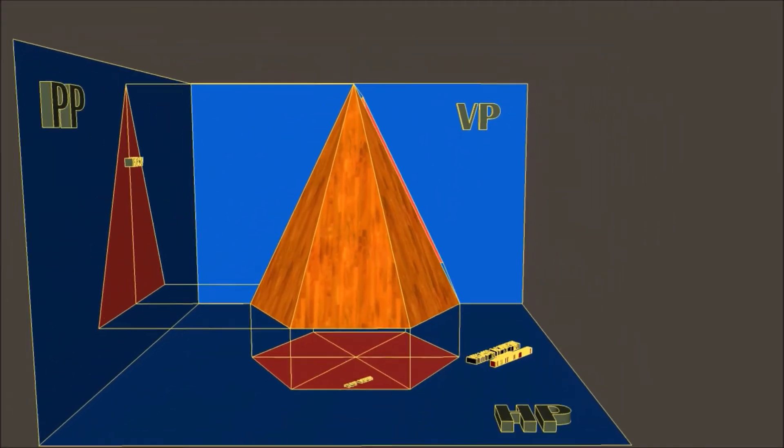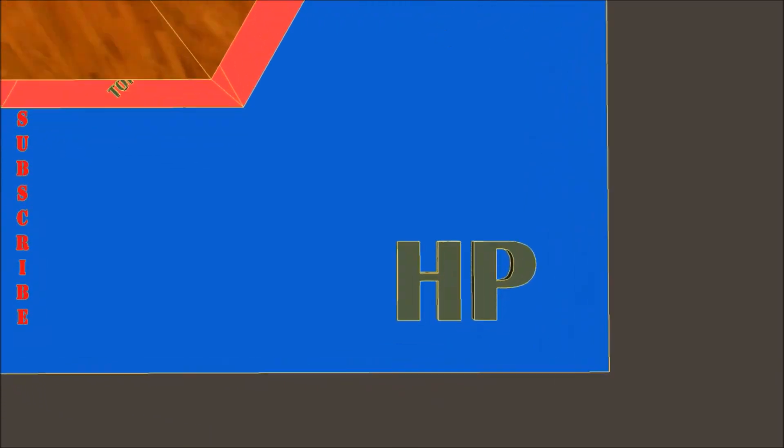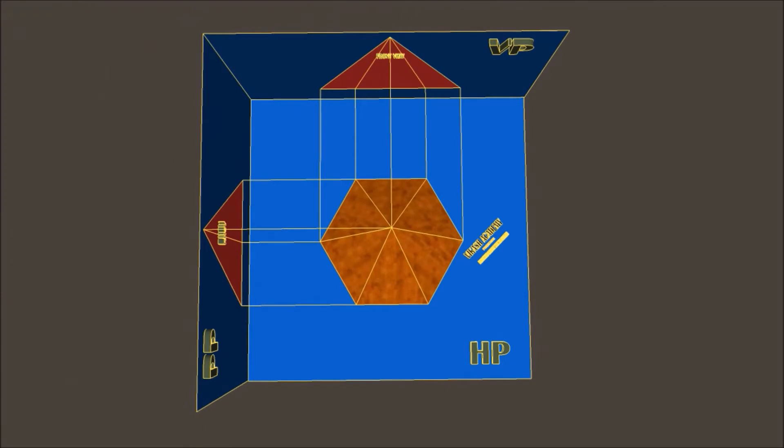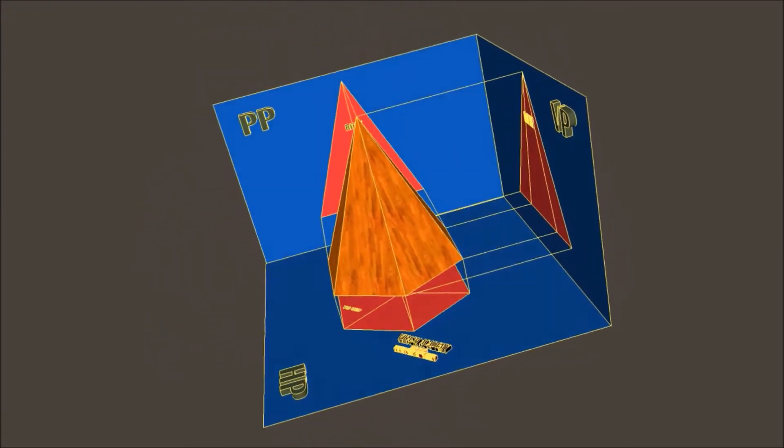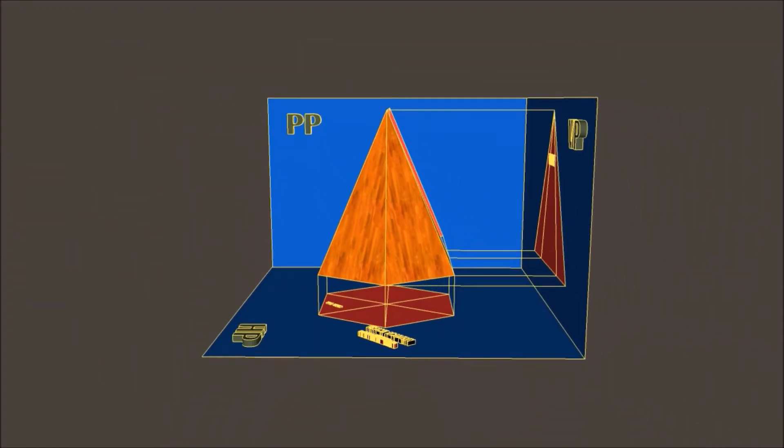This is our vertical plane and we are going to obtain our front view on this particular plane. This is the horizontal plane on which we are going to obtain our top view and this is the profile plane on which we are going to obtain our right hand side view. As I have already discussed, we are going to talk about orthographic projection in first angle projection.